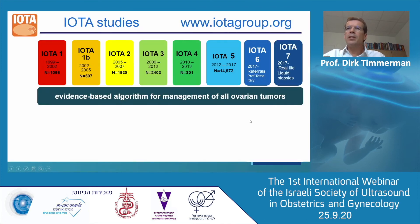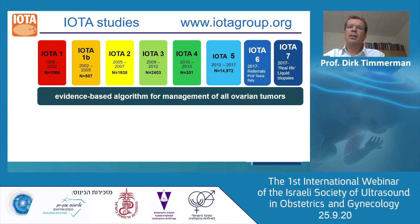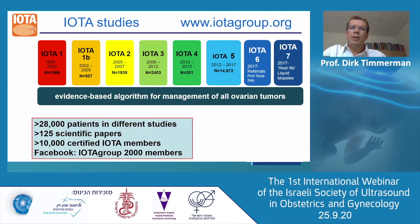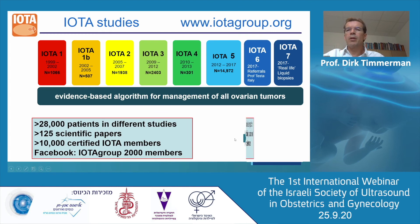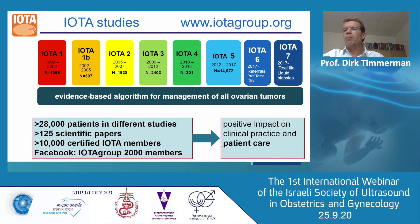In summary, the IOTA studies — find more information at iotagroup.org — have been developed in phases 1 through 7, all aimed at developing an evidence-based algorithm for the management of ovarian tumors. We now have more than 28,000 patients included in different studies, more than 125 scientific papers, and 35 IOTA members from all over the world. The aim is to have a positive impact on clinical practice and patient care.